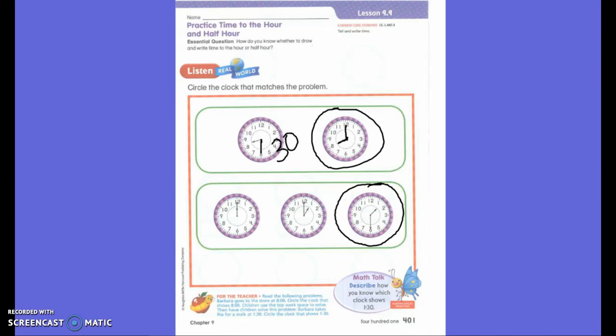The little one is pointing to 12. So this is 12 o'clock. Because my hour hand and my minute hand are both pointing to the 12. So that's 12 o'clock. This one is also pointing to the 12. So it's going to say o'clock as well. So what time is this? 1 o'clock. 1 o'clock. Did I want o'clock? No. I wanted 1:30.